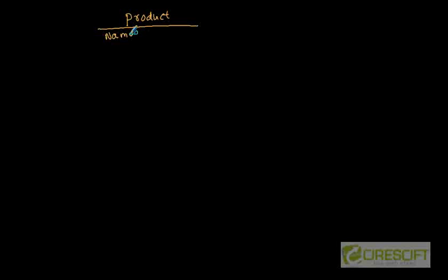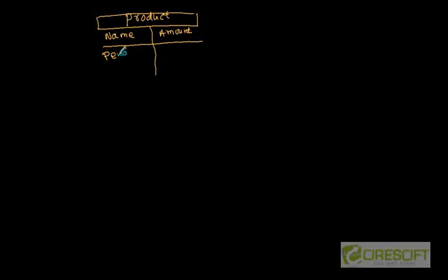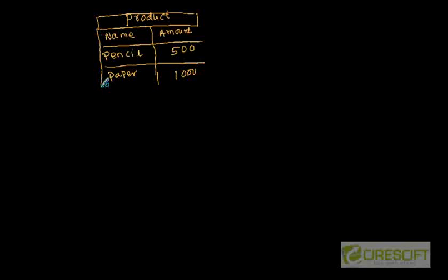Let's take an example. We have a table called product. In the product table, we have two very simple columns — one is name and the second one is called amount. In the name, I have something called pencil and the amount is 500. Let's have another row called paper, and let's say there are 1000 amount of paper. So this is our very simple table with two columns and two rows.